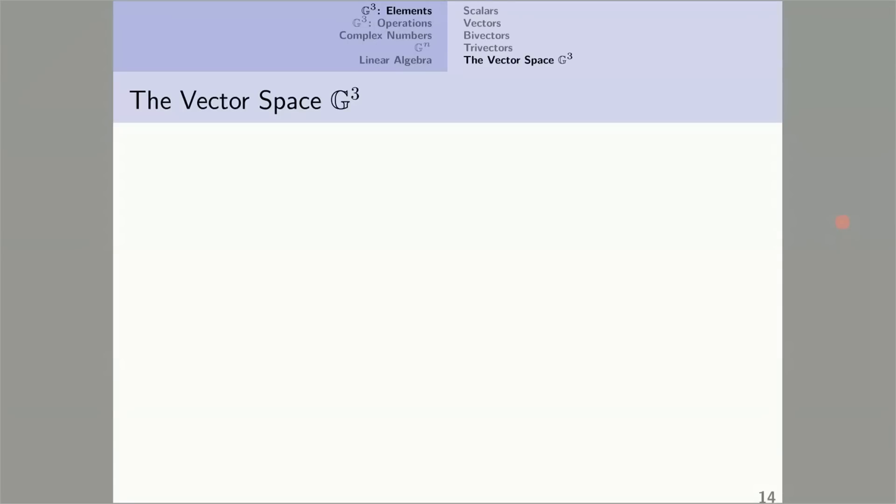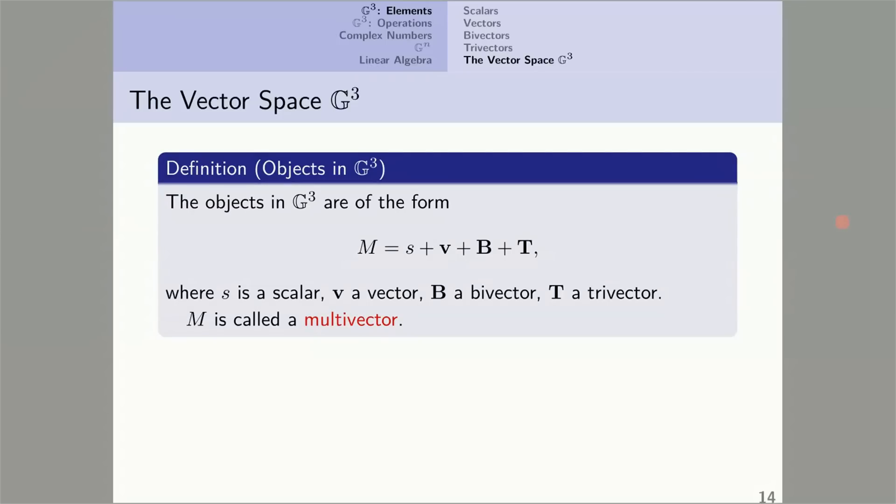The vector space G3. We've now seen the four basic kinds of multivectors in G3. Scalars, vectors, bivectors, trivectors. It's time to put them together into the vector space G3. The objects in G3 are of the form a scalar plus a vector plus a bivector plus a trivector, forming the most general multivector in G3. Notice that V is a vector and also a multivector.